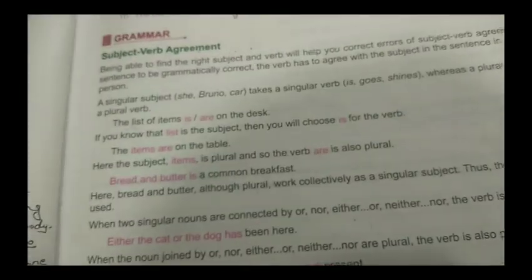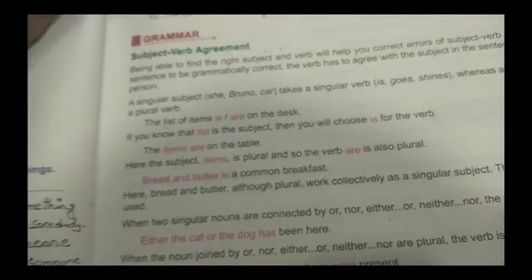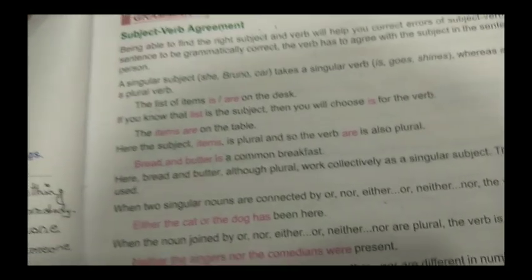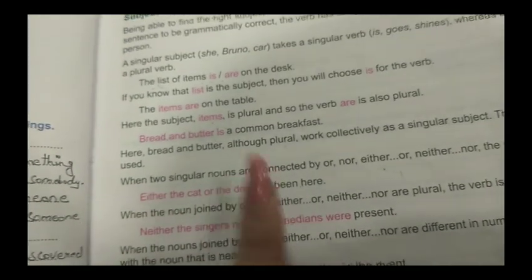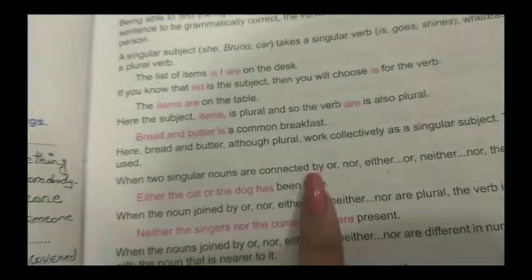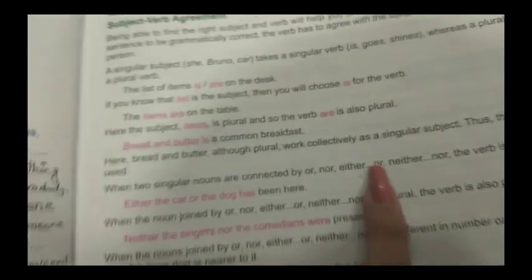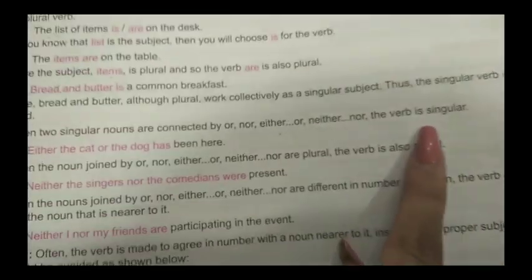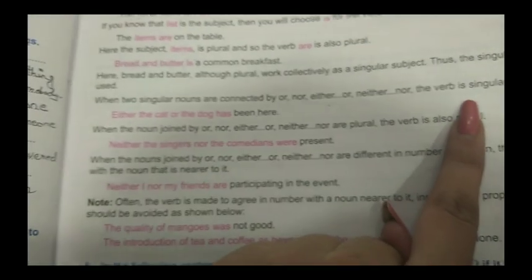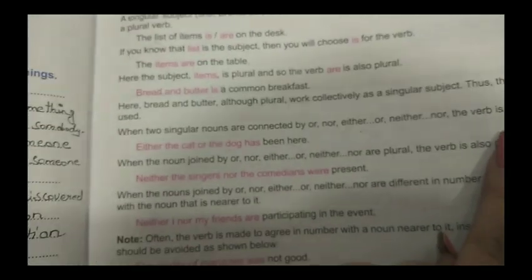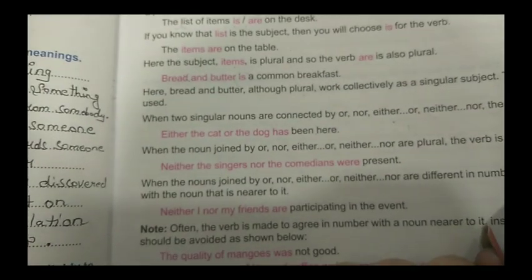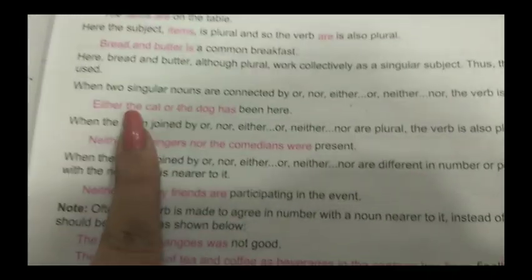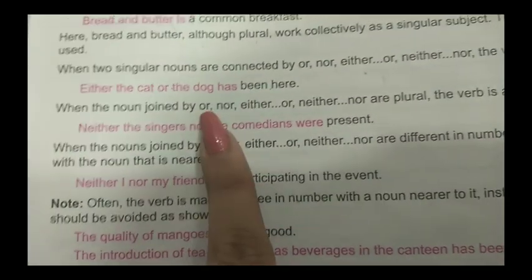Good morning students. In the previous video we were studying the grammar section, in which we studied half part about subject-verb agreement. Today we are going to continue forward. When two singular nouns are connected by or, nor, either...or, or neither...nor, the verb is singular. We count it as singular because when we talk about more than one, the verb is plural, but here with either/nor it remains singular.